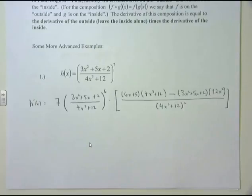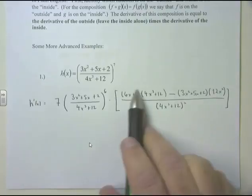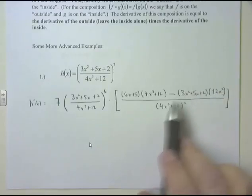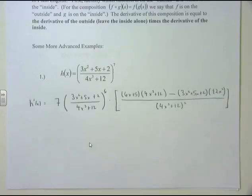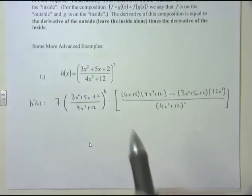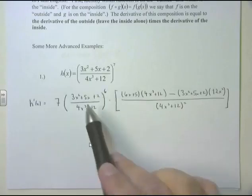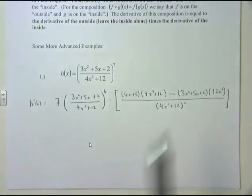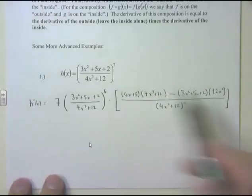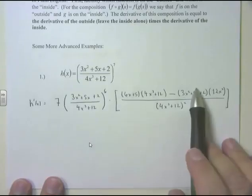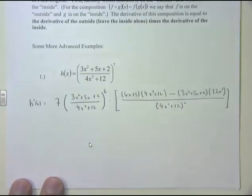We could clean this up and distribute the 12x² and combine like terms, but what we're really looking for is the combination of the chain rule and the quotient rule in action. So for now, leave these as they are. This is the kind of answer we're actually looking for — you can see the chain rule on the outside and the quotient rule on the inside.